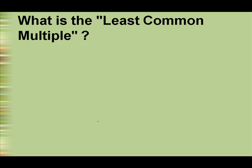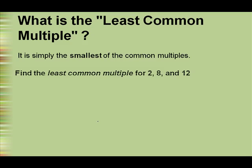What is the least common multiple? It is simply the smallest of the common multiples. Find the least common multiple for 2, 8 and 12. So for 2 let's write our multiples. So 2 times 1 is 2, 2 times 2 is 4, 2 times 3 is 6, 2 times 4 is 8.